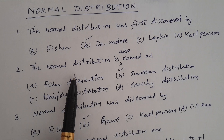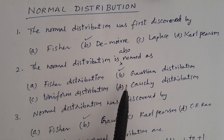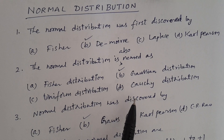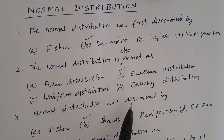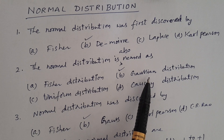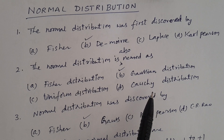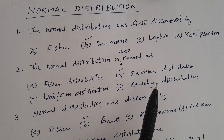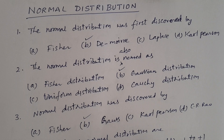In Telugu: The normal distribution is also named as — which name is it called by? The correct answer is Gaussian distribution. Gauss was a great mathematician and statistician, and gave importance to the normal distribution, so it is named Gaussian distribution.